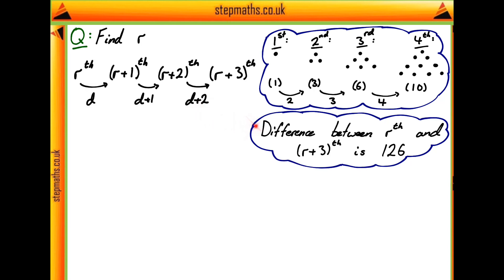Since the information we were told is that the difference between r and r+3 is 126, then we know that these differences, when added together, should give us 126.